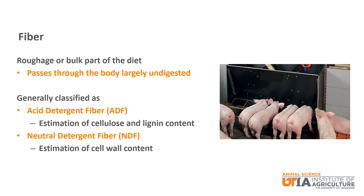Fiber is the roughage or bulk part of the diet that passes through the body largely undigested by the animal. Fiber is generally classified as acid detergent fiber and neutral detergent fiber. Acid detergent fiber or ADF is an estimation of the cellulose and lignin content. Neutral detergent fiber, or NDF, is an estimation of the cell wall content. Fiber is commonly reported as crude fiber on most feed labels.